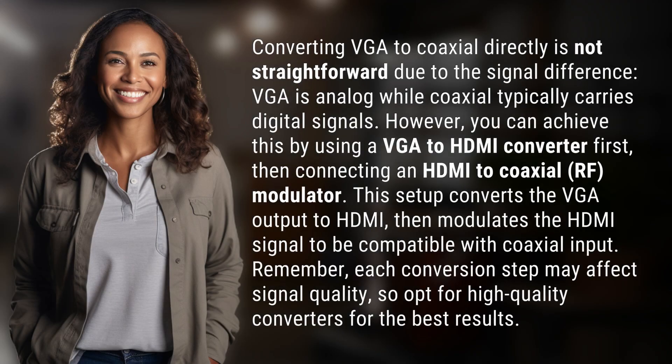Converting VGA to coaxial directly is not straightforward due to the signal difference. VGA is analog while coaxial typically carries digital signals. However, you can achieve this by using a VGA to HDMI converter first, then connecting an HDMI to coaxial RF modulator. This setup converts the VGA output to HDMI, then modulates the HDMI signal to be compatible with coaxial input.